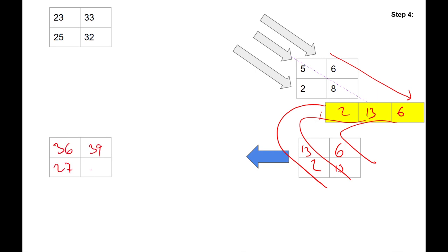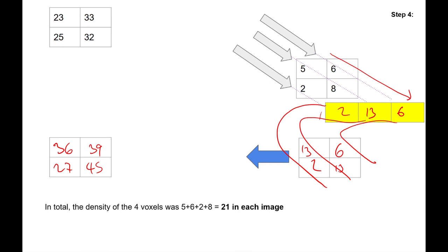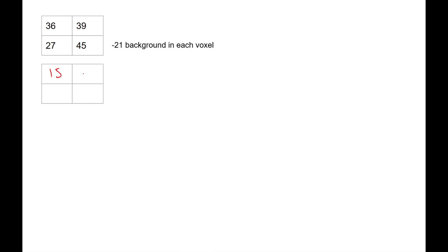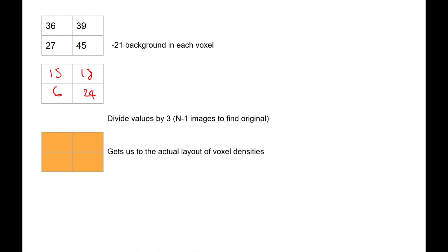The four voxels of my patient add up to a background total of 21. Subtracting 21 from each memory value gives: 15, 18, 6, and 24. Dividing by 3 (that's n minus 1, where n equals 4 images) to get the average per image gives: 5, 6, 2, and 8. This exactly reconstructs the patient's original attenuation coefficients — we've successfully reconstructed the patient's absorption from information collected at different angles.